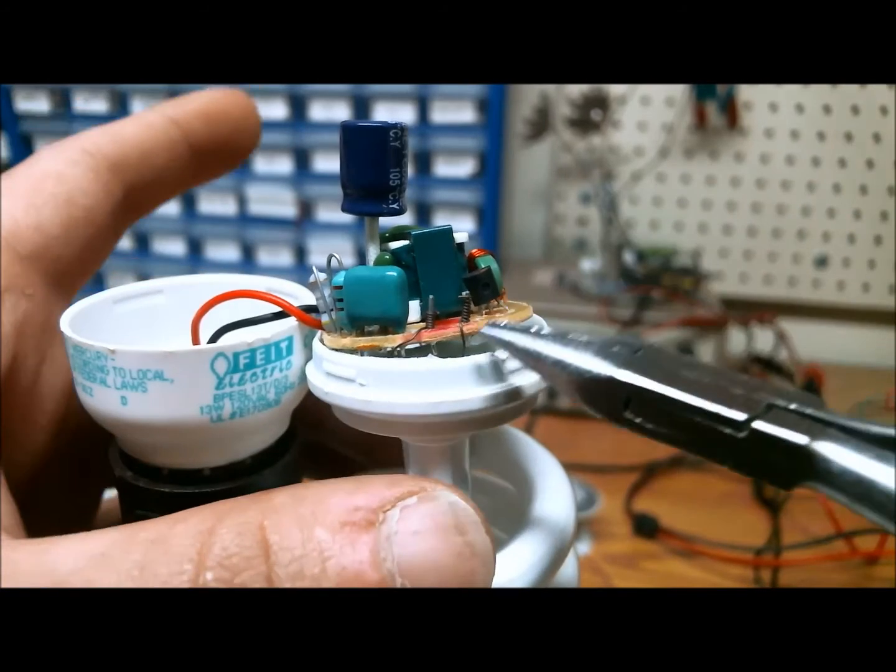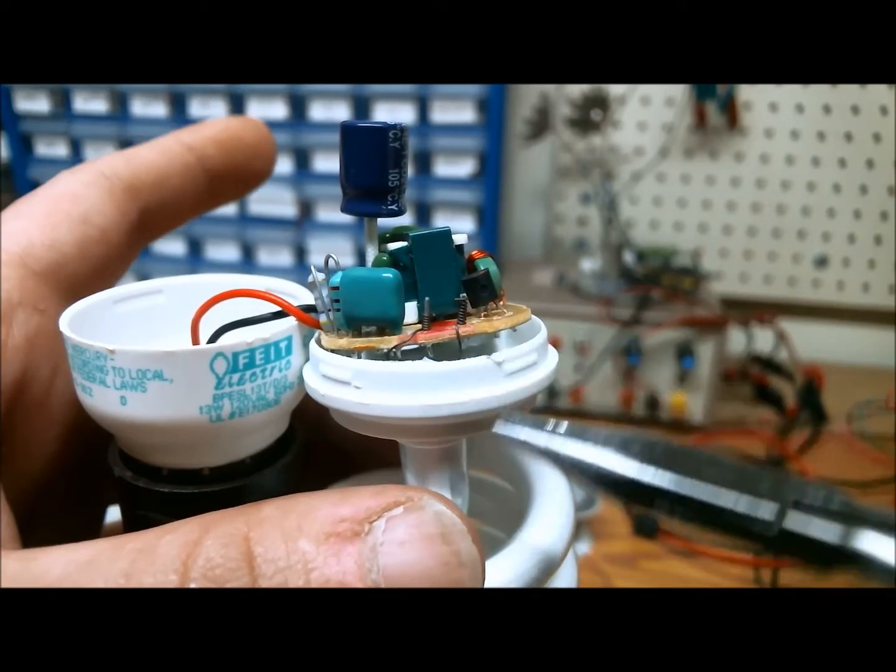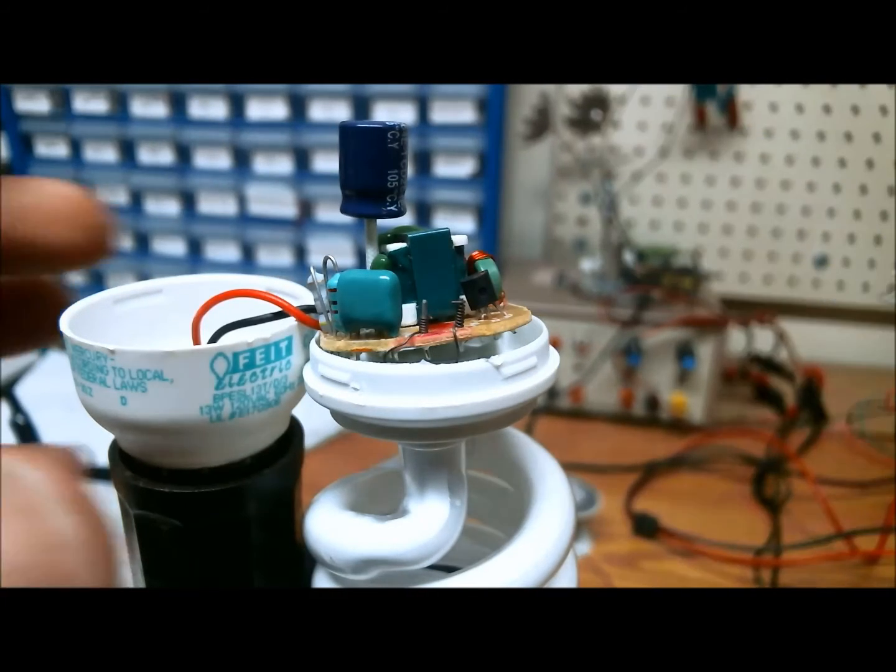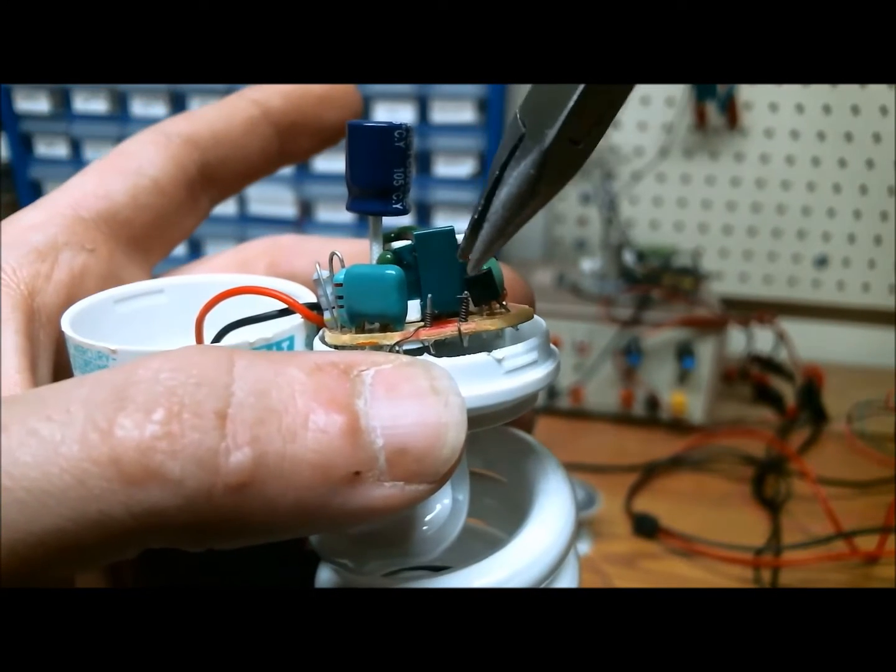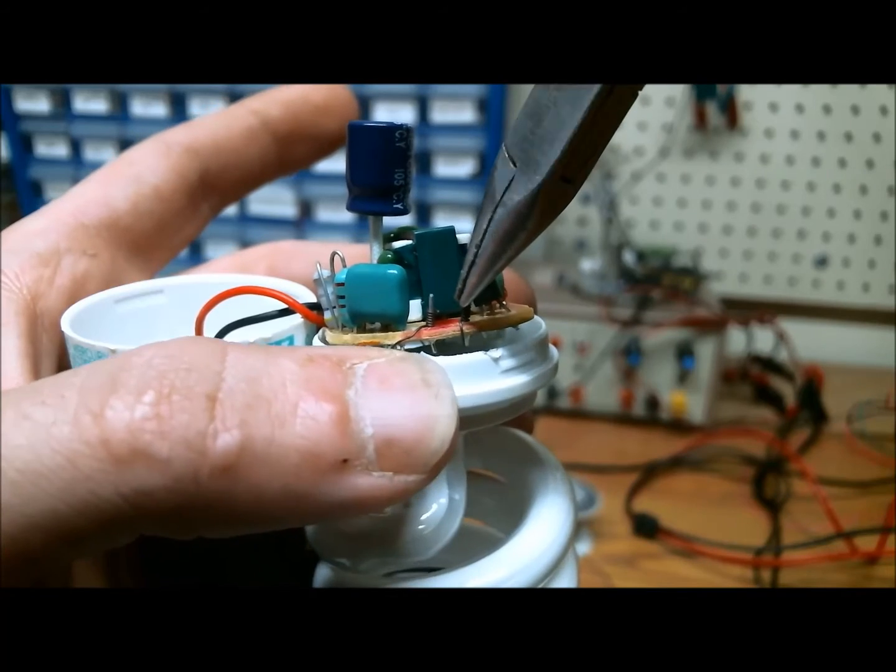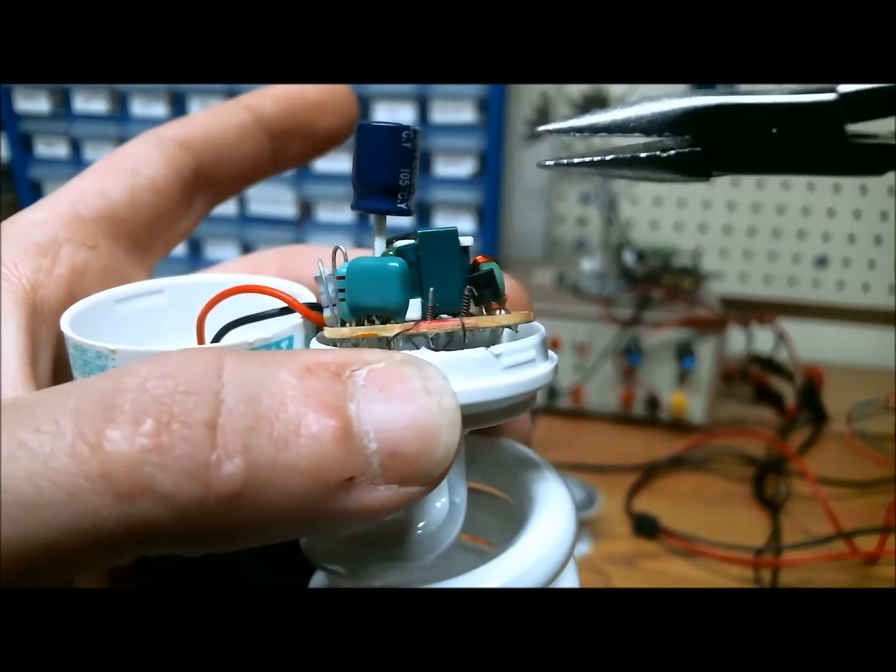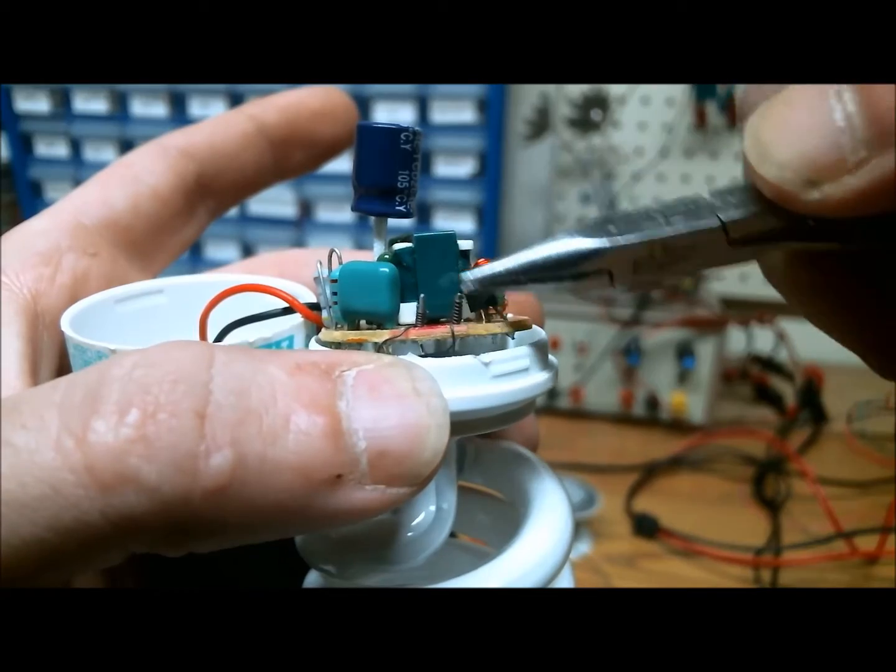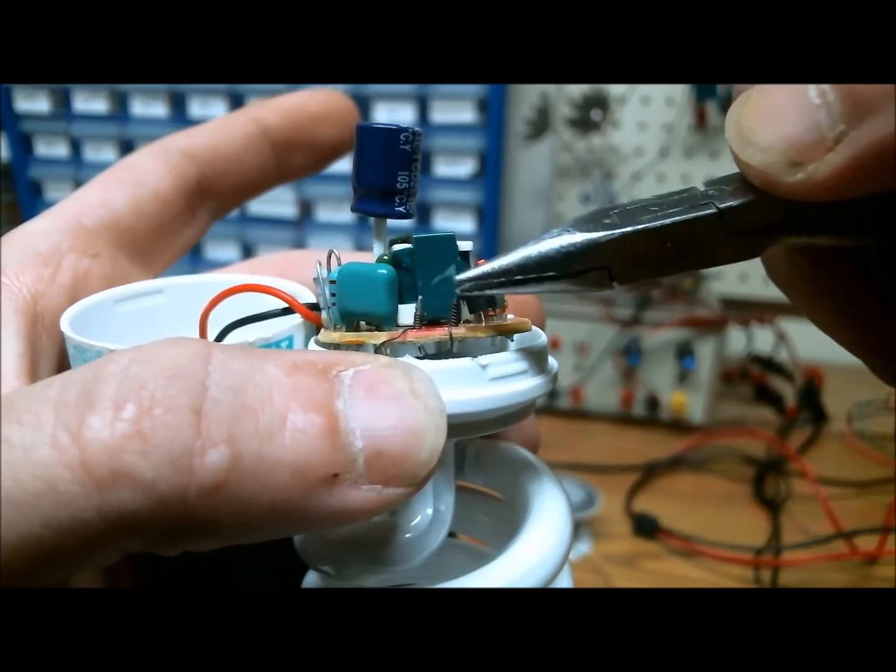All right, so I tried to de-solder the filament from the circuit board. That didn't really work out too well just because it's an awkward angle. I'm going to try to unravel these leads here on these two poles, and they seem like they will come off. They're not soldered in place. It's just a pressure contact.